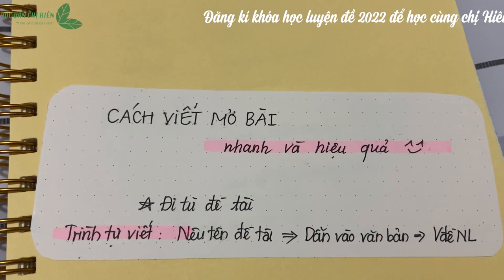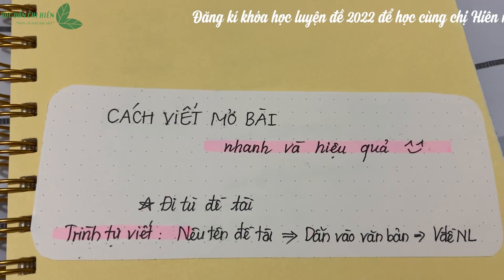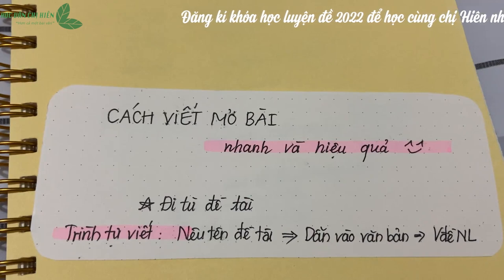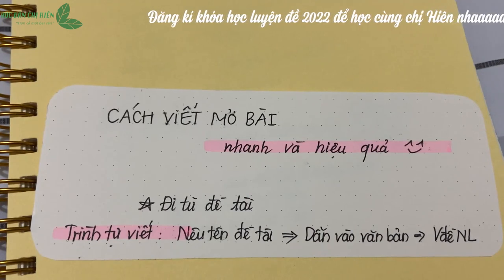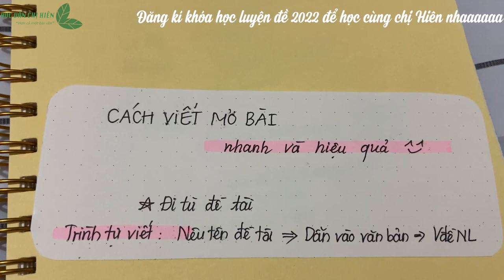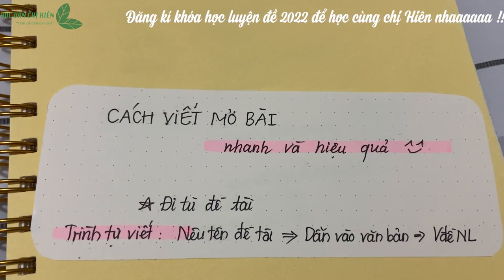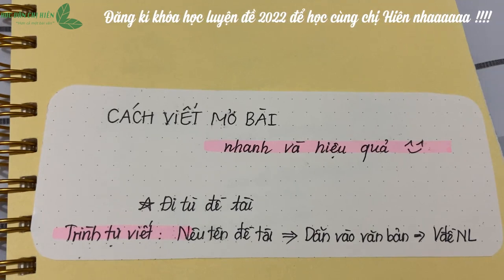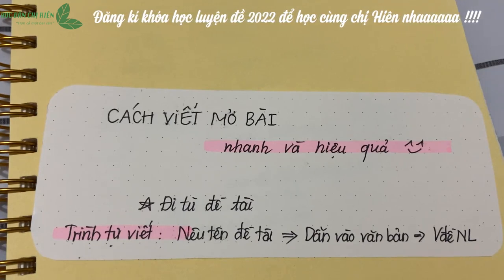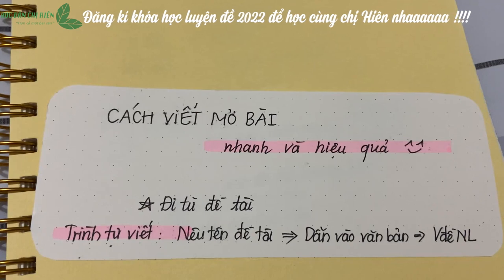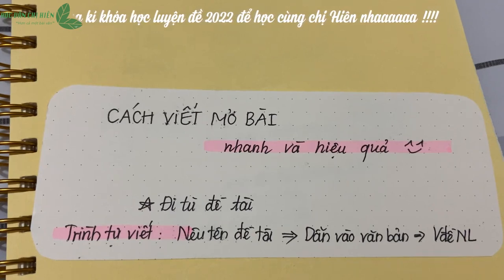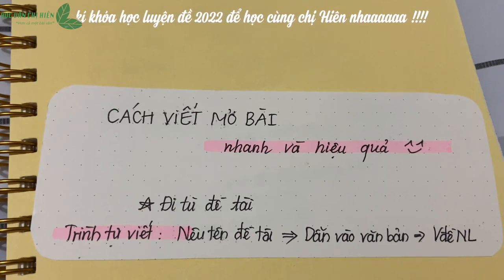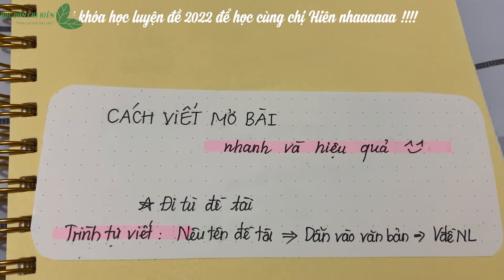Chị đã nêu ra trình tự viết cho chúng ta rồi. Đây là một trình tự viết cơ bản thôi: chúng mình sẽ ngắn gọn nêu tên đề tài mà chúng mình đang đề cập, sau đó dẫn vào phần văn bản và đi vào vấn đề nghị luận trọng tâm mà đề bài đang đặt ra.